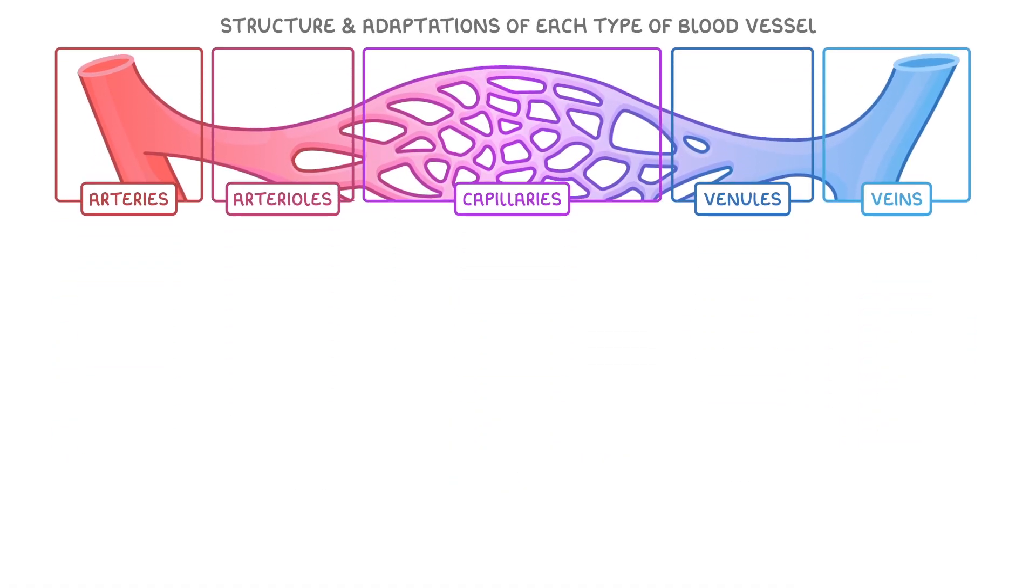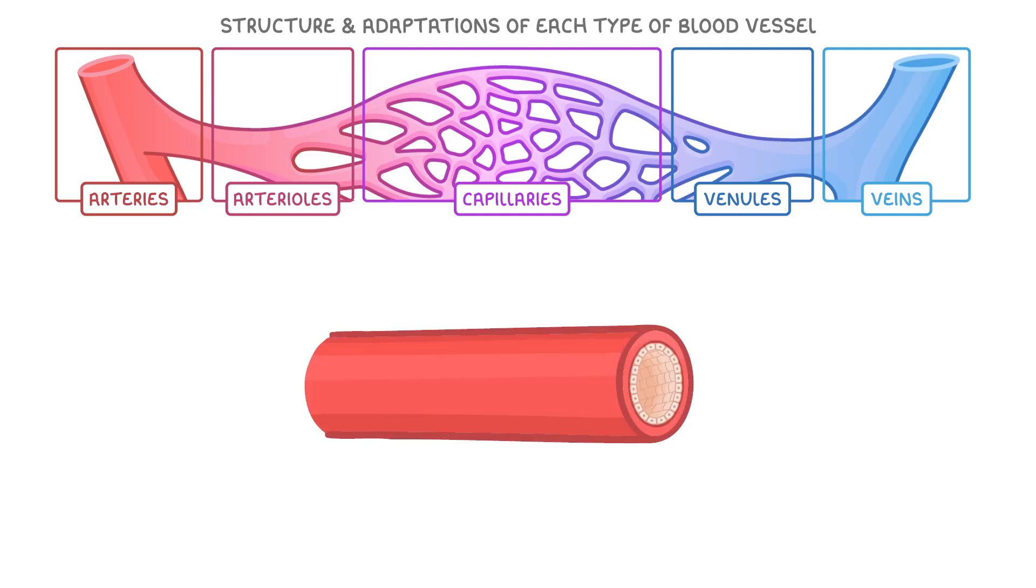Now let's take a look at the structure and adaptations of each type of blood vessel in more detail. The first thing to mention is that all these vessels are tubular structures made up of a wall with an inner layer of endothelial cells that forms a lining called the endothelium. In the middle of these vessels there's a space called a lumen, which is where the blood flows through.